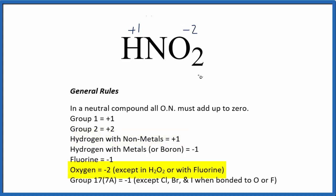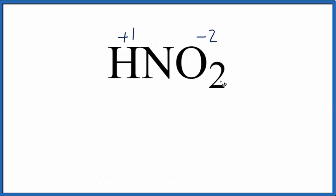So if I add the oxidation numbers up for the ones I know, I have two times minus two, that's minus four, plus one, that's minus three. So to cancel that minus three out I need a plus three for the nitrogen. So the oxidation number for nitrogen is plus three.